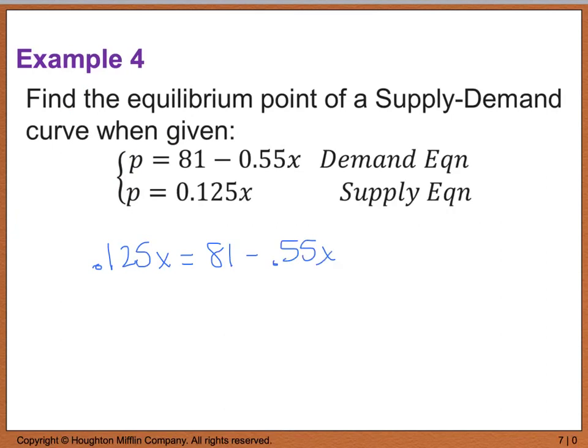If I take each equation and say 0.125x equals 81 minus 0.55x, and I get all of my x's on one side, then I have 0.625x equals 81, or x is equal to 120. When we're talking about supply and demand, x is our quantity or the number of units.